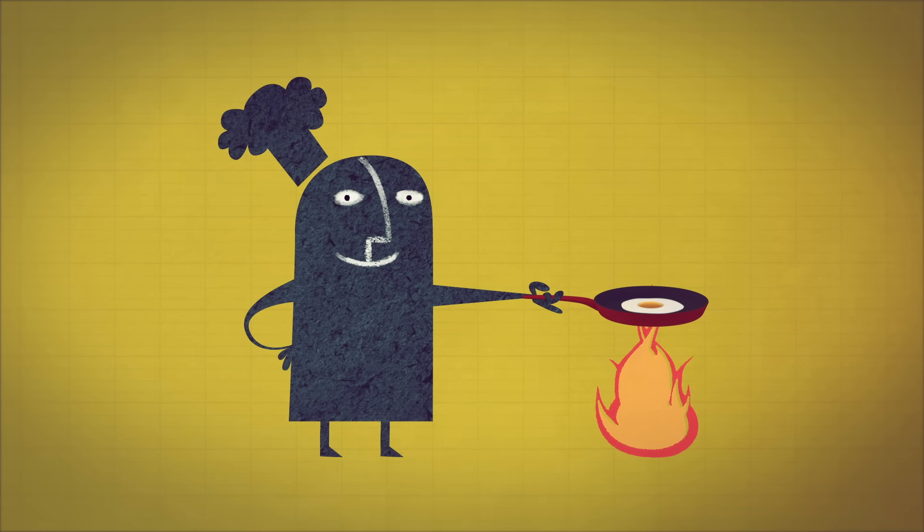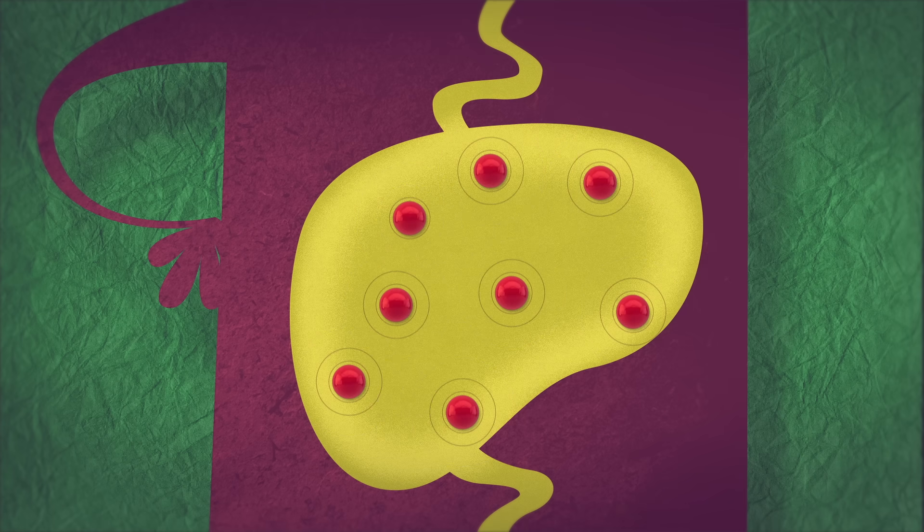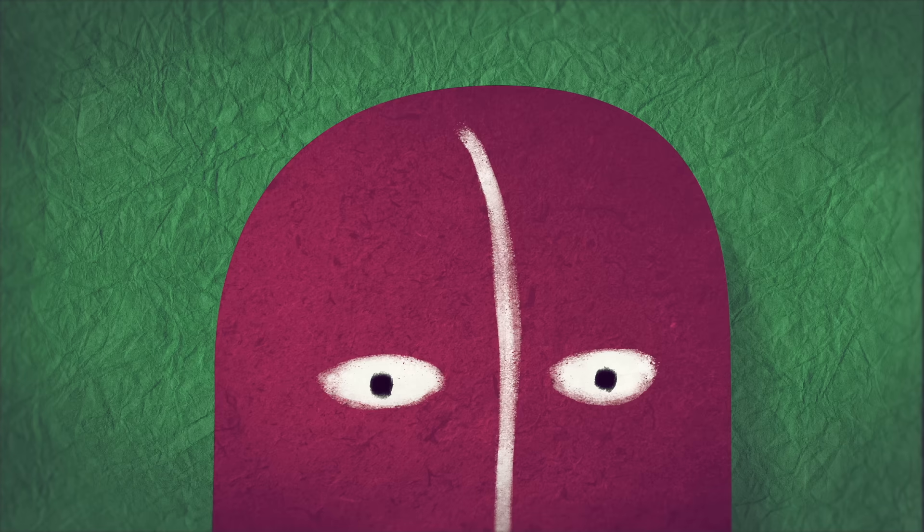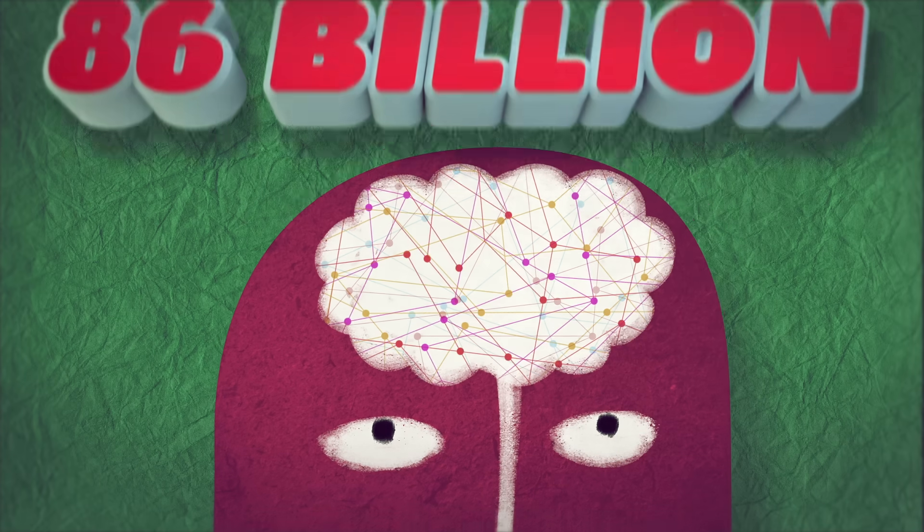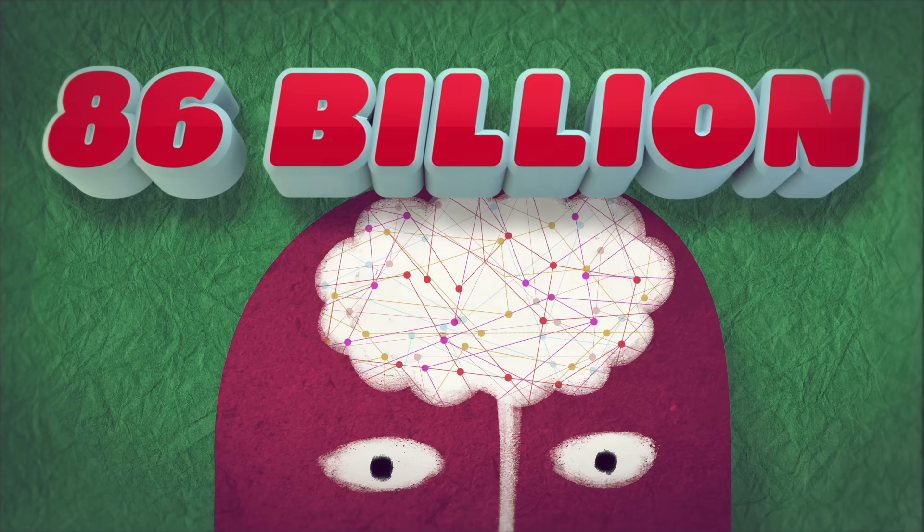The invention of cooking 1.5 million years ago gave us a huge advantage. Cooked food is rendered soft and pre-digested outside of the body. Our guts more easily absorb its energy. Cooking frees up time and provides more energy than if we ate foodstuffs raw, and so we can sustain brains with 86 billion densely packed neurons, 40% more than the ape.